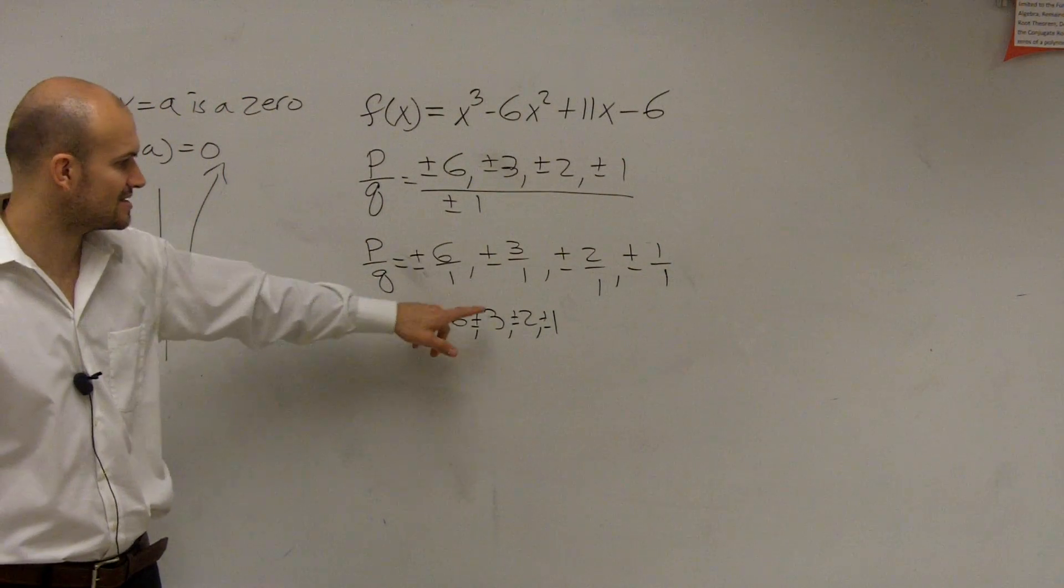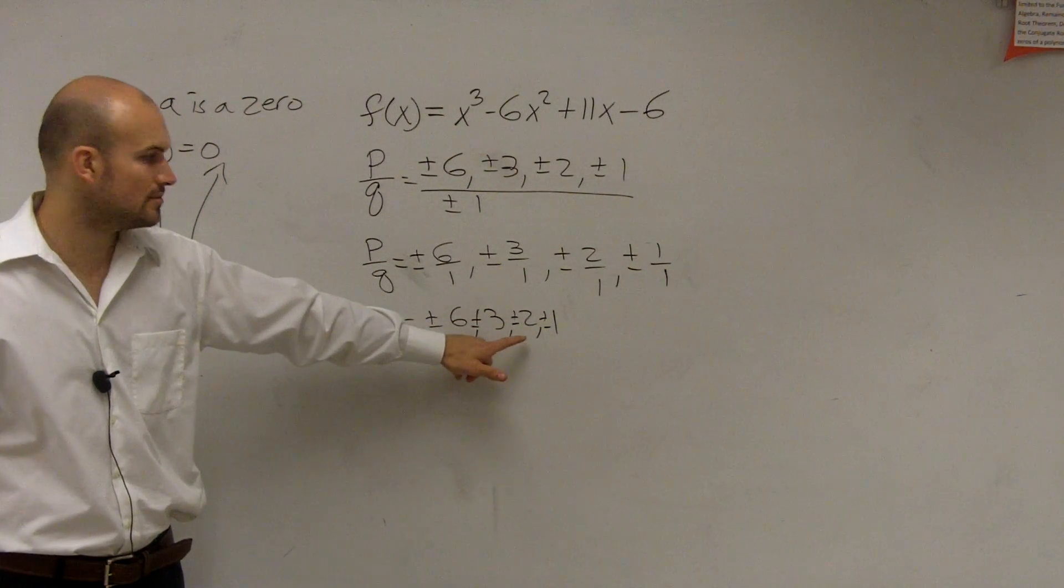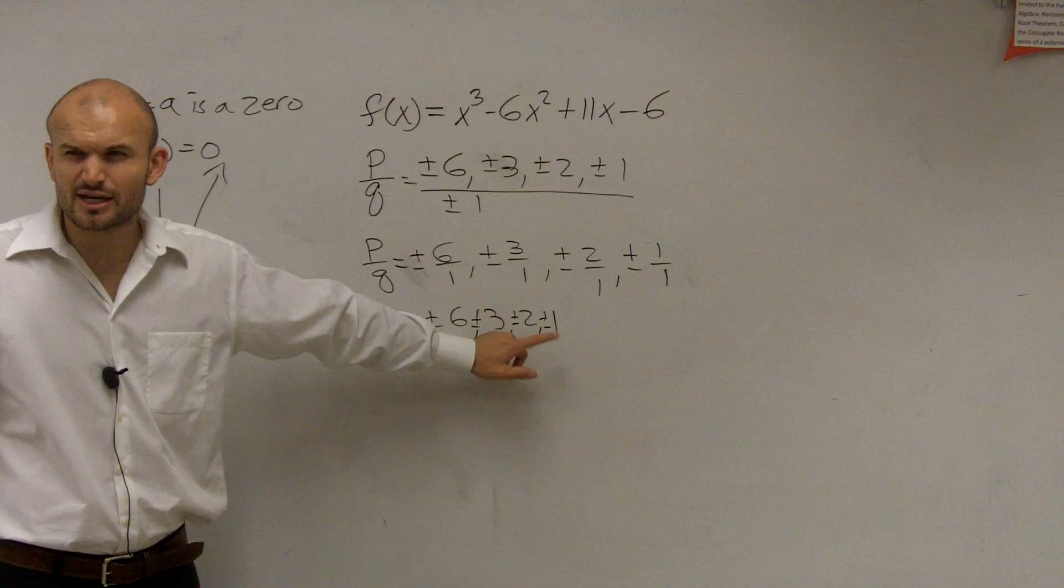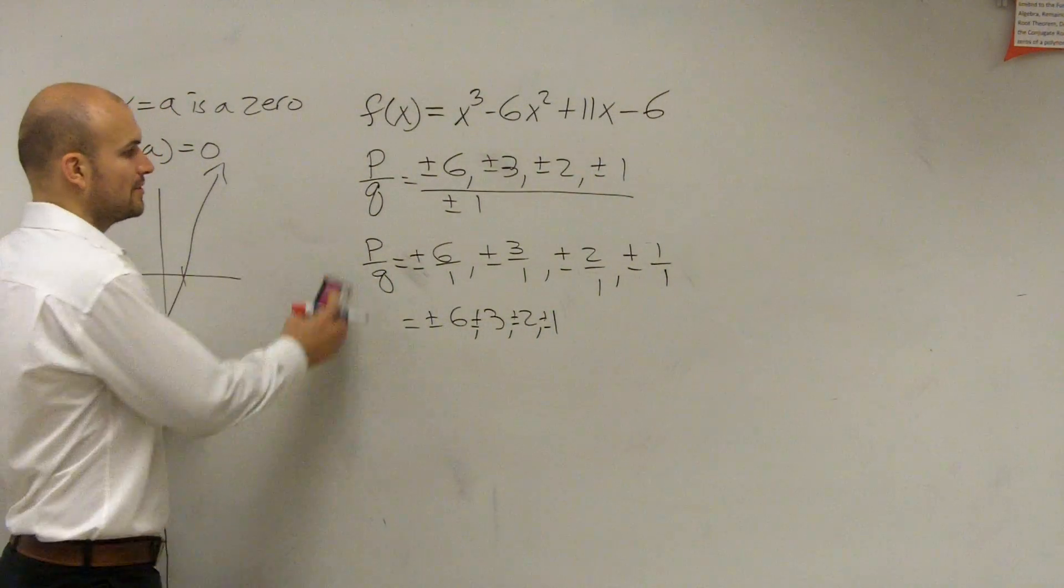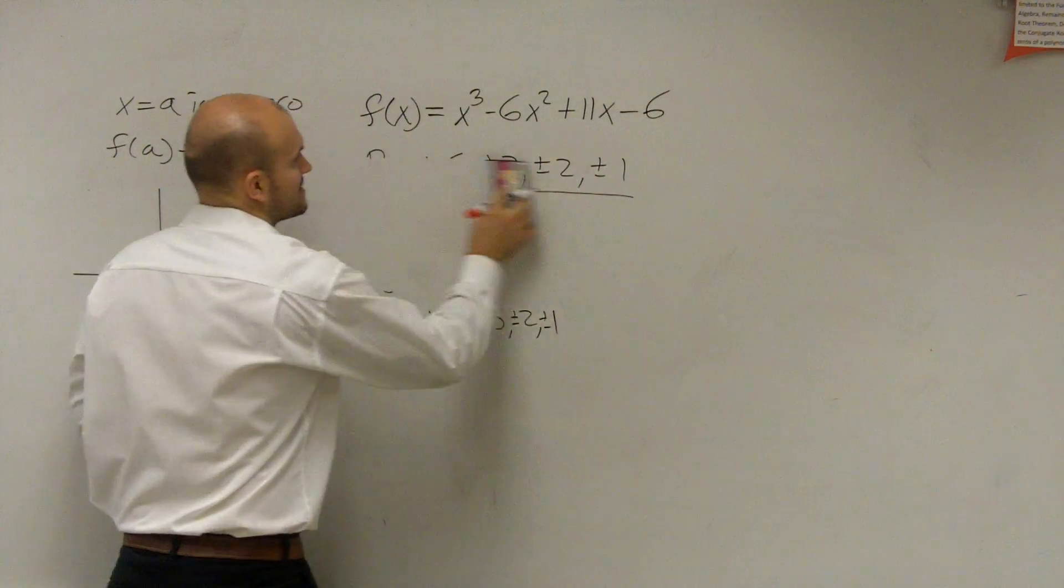It did not cross at positive 6, negative 6, plus 3, negative 3, positive or negative 2, but it looked like it crossed at positive 1. So what I'm going to do is verify that.